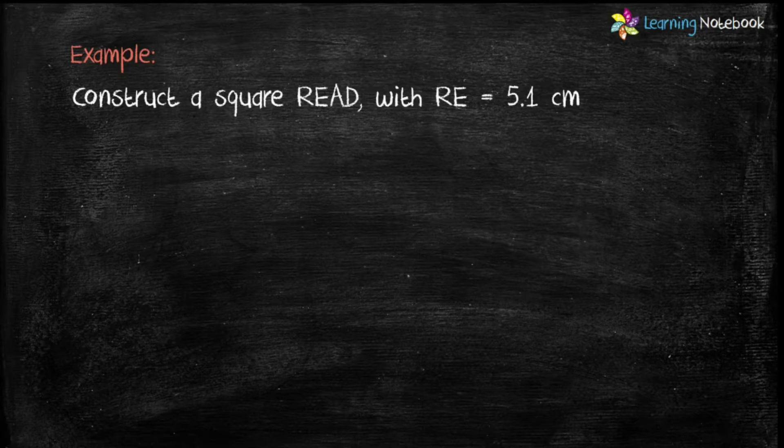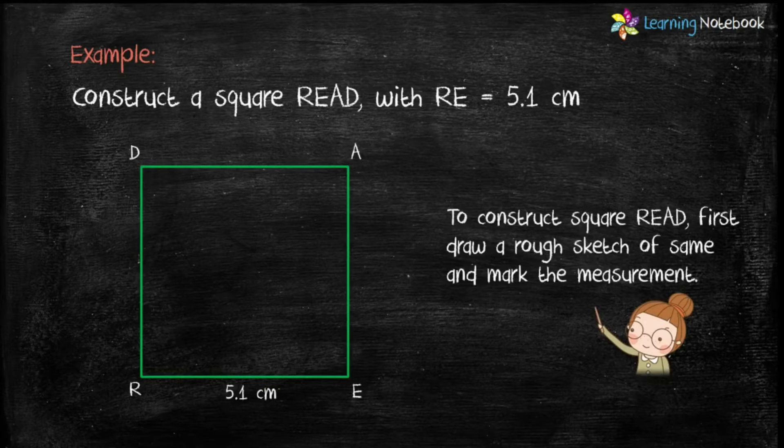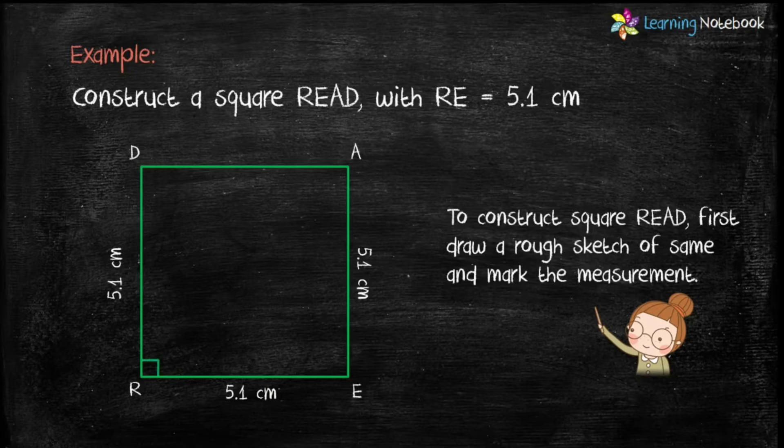But students, we need 5 measurements to construct any quadrilateral. Since it is a square, we can take 3 sides as 5.1 cm and 2 angles as 90 degrees. To visualize the construction of square, let's first draw a rough sketch of the same and mark the given measurements.